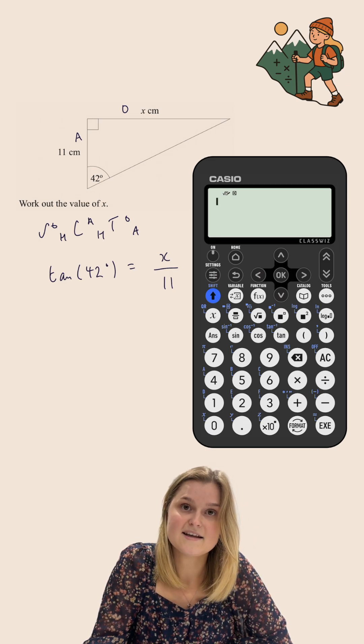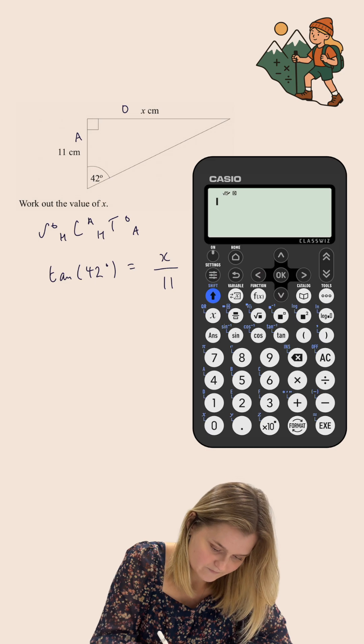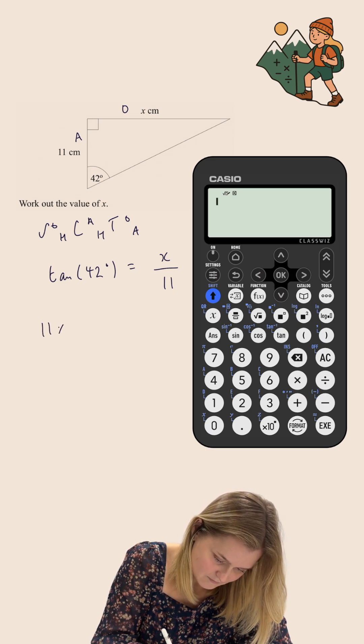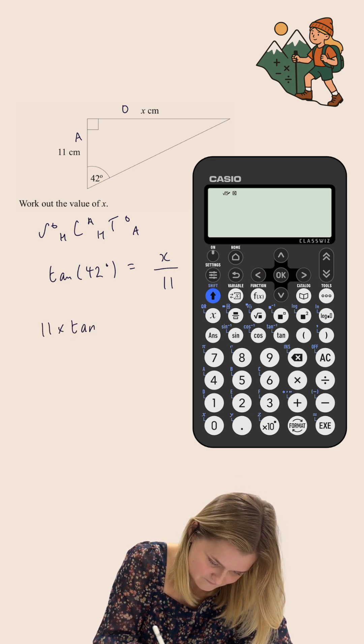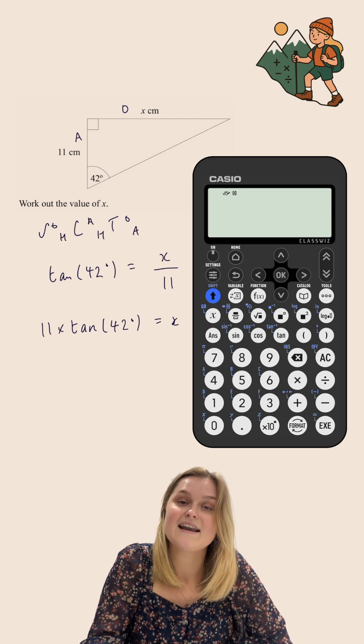Now I'm trying to figure out x here, so I'm going to multiply both sides by 11 to get x on its own. So 11 multiplied by tan 42 degrees is equal to x and now I just need to put this into my calculator.